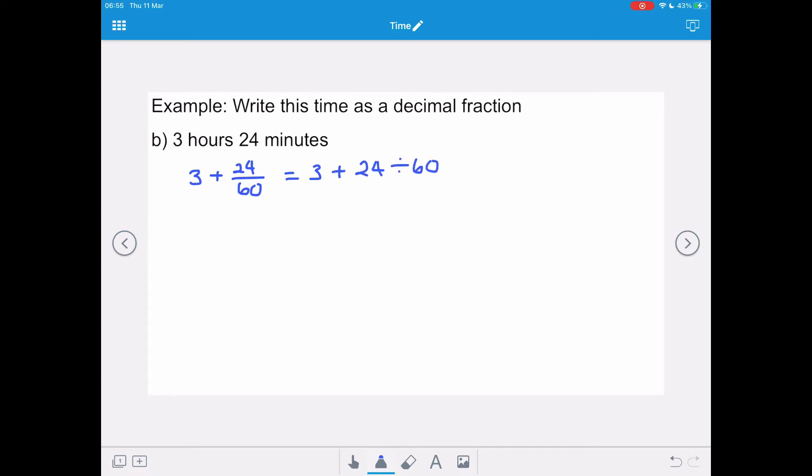And applying BODMAS, we need to do the 24 divided by 60 first, so it's 3 plus 0.4, which gives us 3.4 hours as our decimal fraction for 3 hours 24.